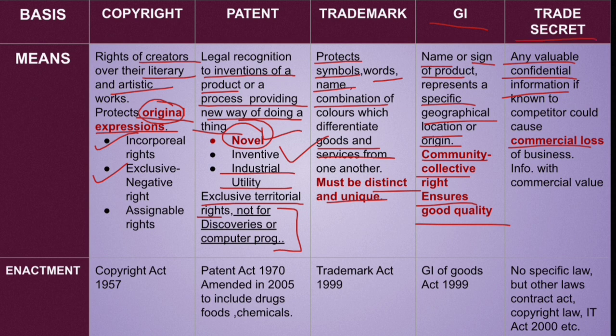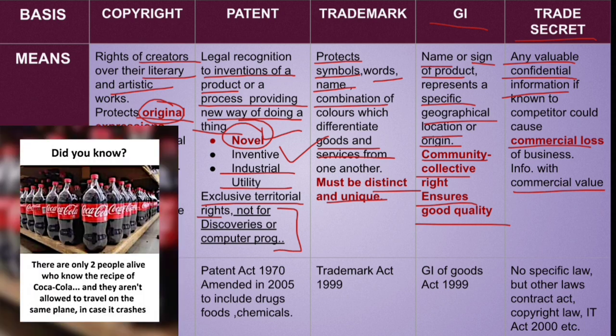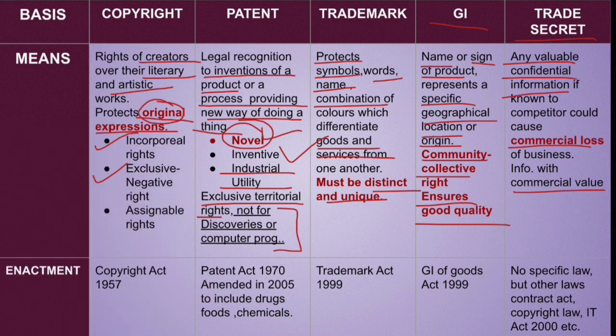One very important thing about trade secrets: they must have commercial value. If there is no commercial value, it cannot be considered a trade secret. Examples include Coca-Cola's recipe, which is still unknown, and Oreo cookies' recipe, which is also still unknown — these are trade secrets so that others cannot manufacture the same product in the market.